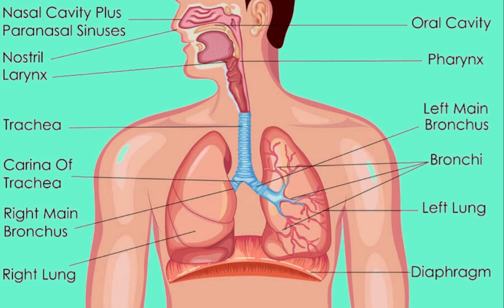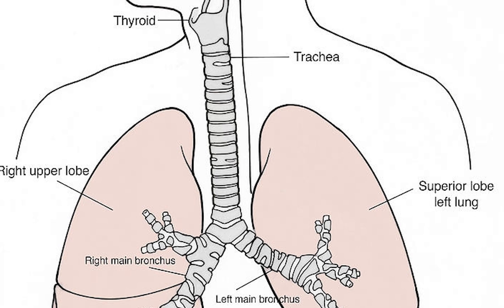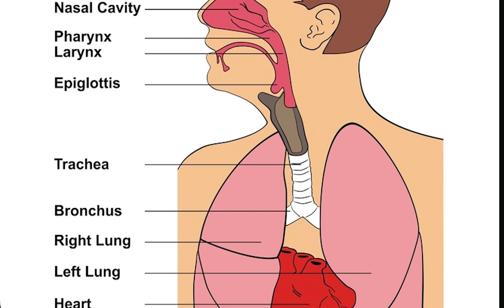Bronchioles are defined as the small airways lacking any cartilaginous support. The first bronchi to branch from the trachea are the right and left main bronchi, second only in diameter to the trachea. These bronchi enter the lungs at each hilum, where they branch into narrower secondary bronchi known as lobar bronchi. These branch into narrower tertiary bronchi known as segmental bronchi. Further divisions of the segmental bronchi are known as 4th order, 5th order, and 6th order segmental bronchi.